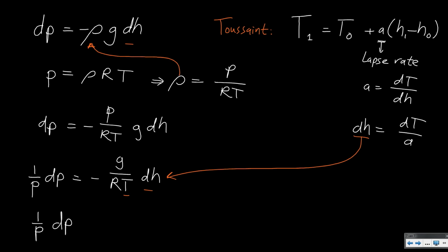After substitution, 1 divided by p times dP remains unchanged, and on the right we get minus G over R times 1 divided by T times dT divided by A. We have a number of constants on the right side — G, R, and A — while T will vary with a dT behind it. This equation is true for a very small step in altitude, but for a larger step we need to convert it into an integral.